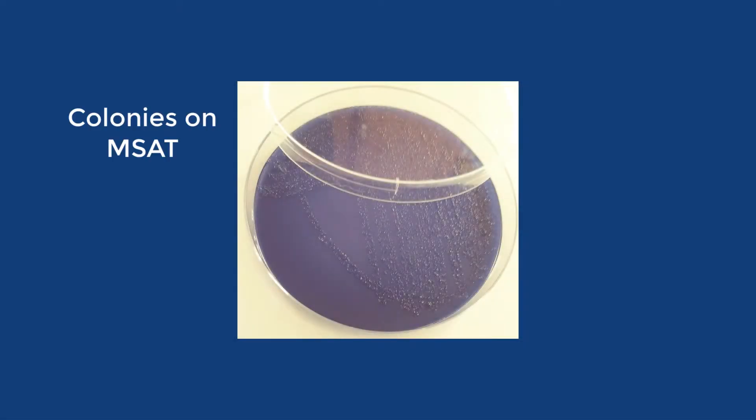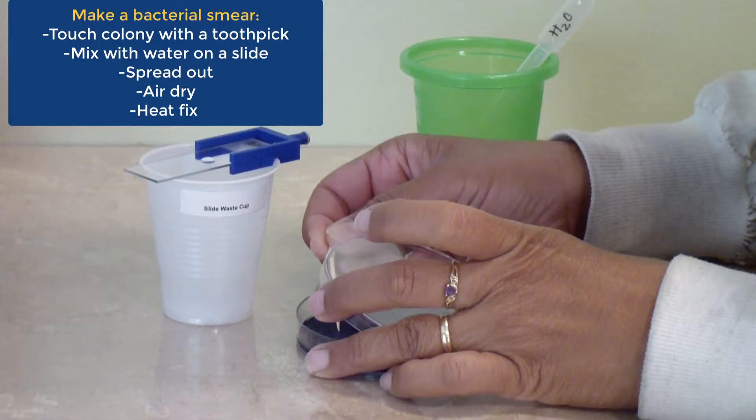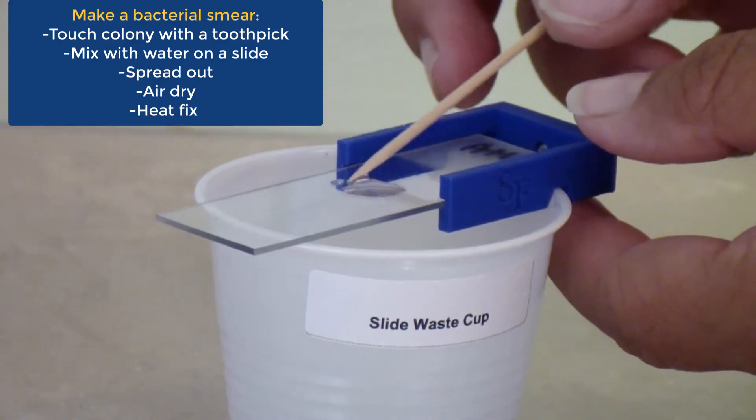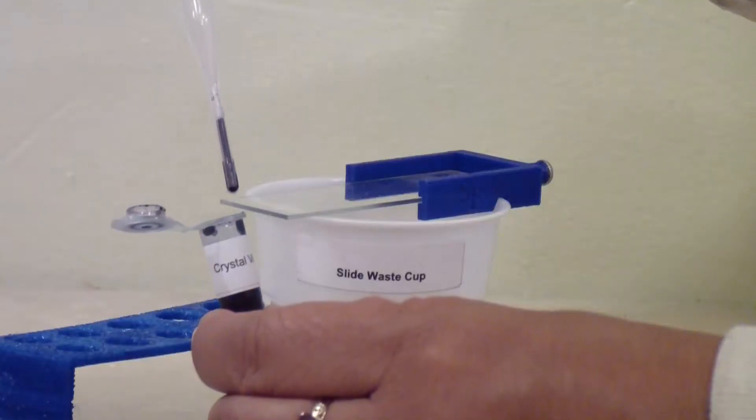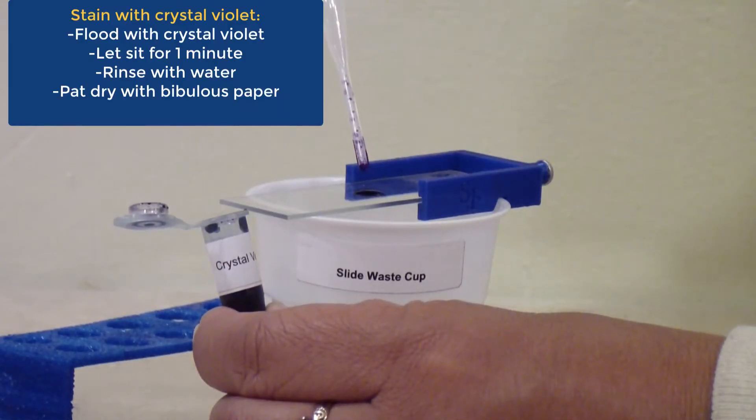Find a colony on your MSAT plate of which you would like to see the bacteria. Prepare a bacterial smear as shown in the bacterial smear video and stain the smear with crystal violet as shown in the video for the cheek swab.